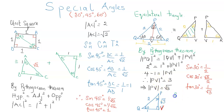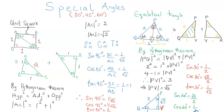For sine of 60 degrees, we need the opposite over the hypotenuse. PV is the opposite of the 60-degree angle, with length root three, over the hypotenuse two. So sin 60 equals root three over two. Cos 60 is the ratio of adjacent to hypotenuse. For the 60-degree angle, its adjacent is QV, which is one, divided by the hypotenuse PQ, which is two. So cos 60 equals one half. Finally, tan 60 equals the opposite over the adjacent: PV over QV, which is root three over one, and that equals root three.